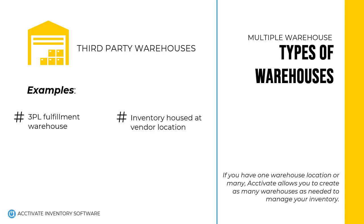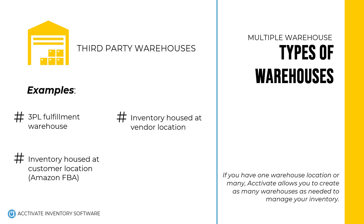Another example is inventory housed at a vendor's location. Whether you have purchased it or not, if you need the visibility to see what you have available at your supplier's facility, you'll set up a warehouse for that in Activate. Or maybe you sell via Amazon FBA — you are responsible for sending restocks of your products to their facility, so adding an FBA warehouse to Activate makes sense.